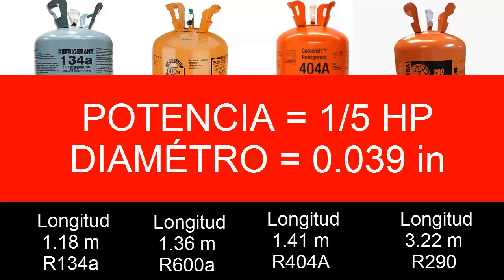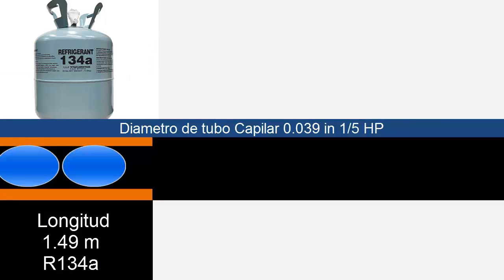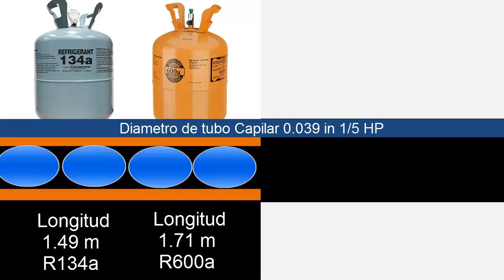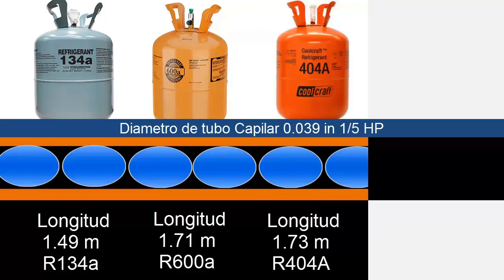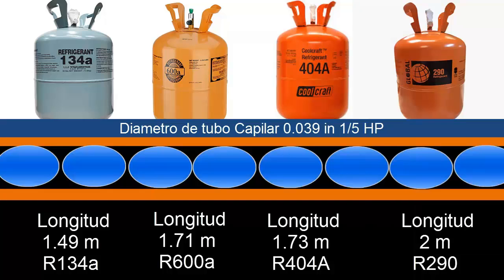Now let's move on to the power of a fifth HP. With R-134A the length must be 1.49 meters, with R-600A the length must be 1.71 meters, when we work with R-404A the length must be 1.73 meters, and when we work with R-290 the length of the capillary must be 2 meters.